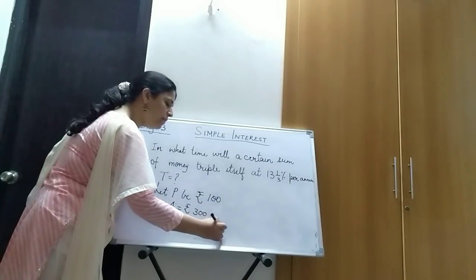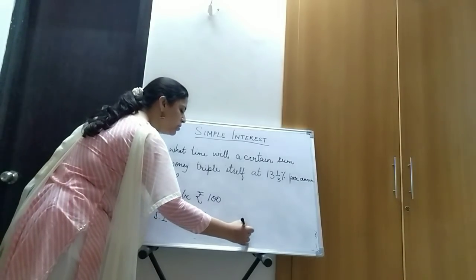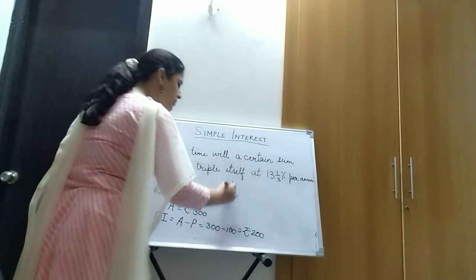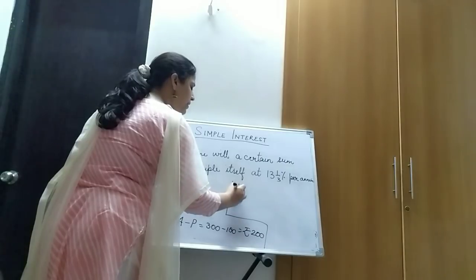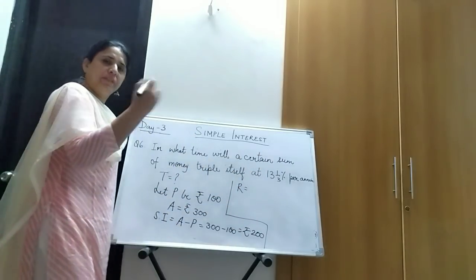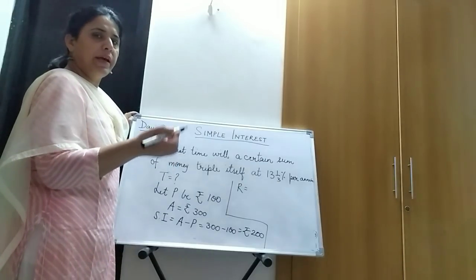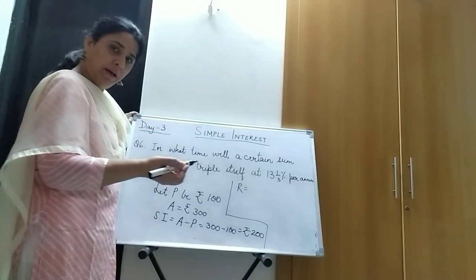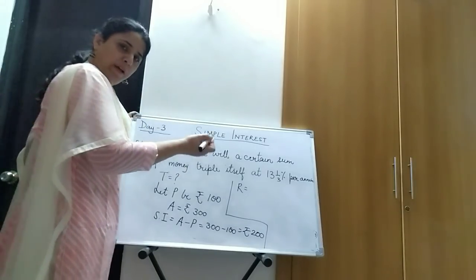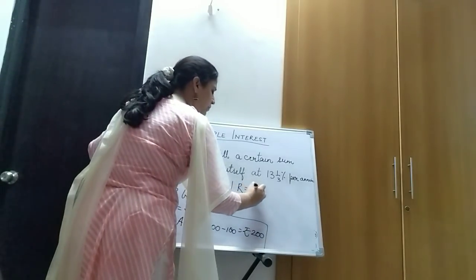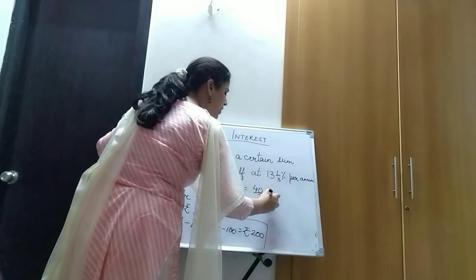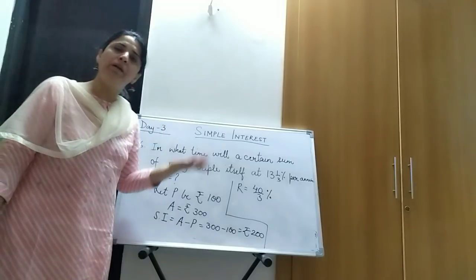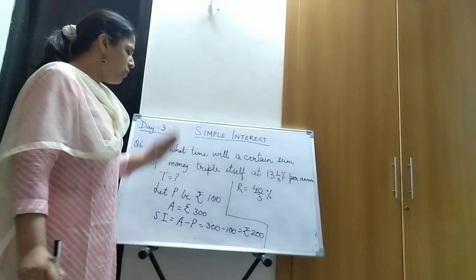The rate of interest is 13 and one-third percent. Convert it into an improper fraction: 13 whole 1 by 3 becomes (13×3 + 1)/3 = 40/3 percent per annum. Since the rate is per annum, the time will come out in years.